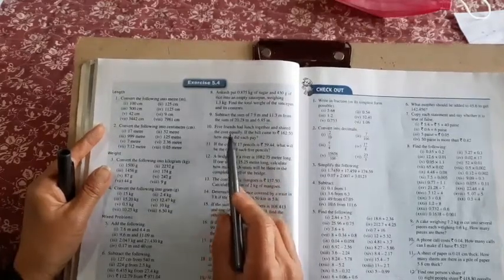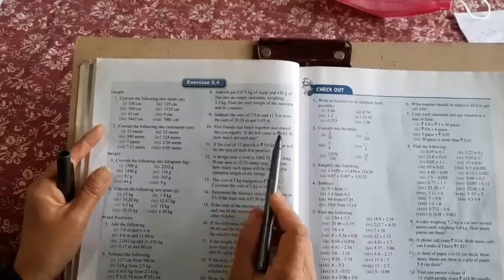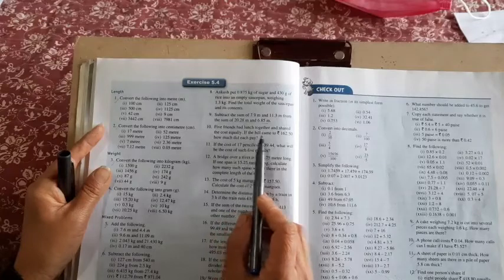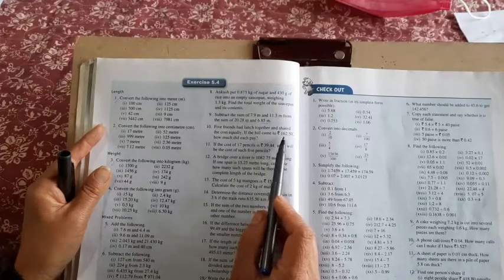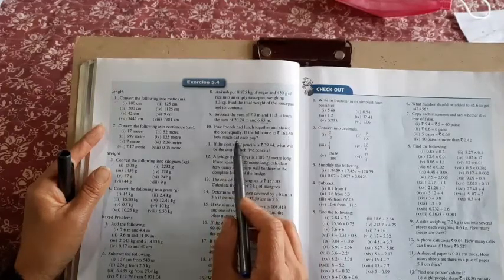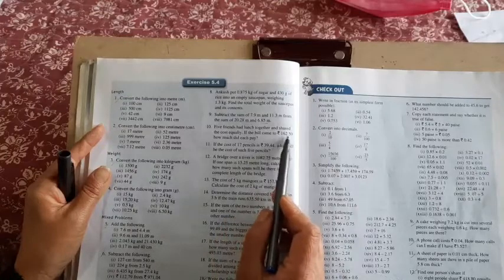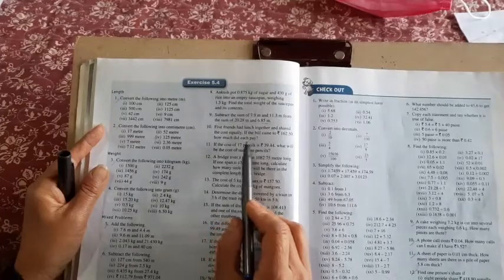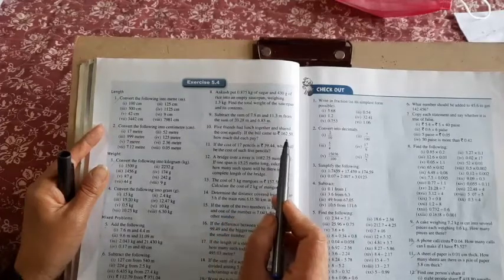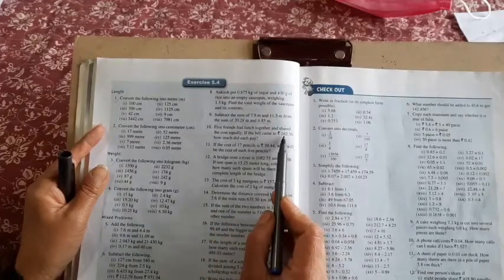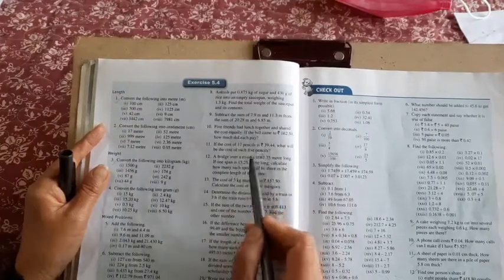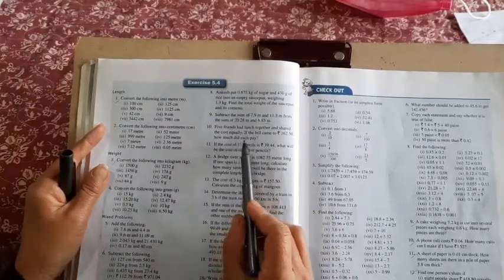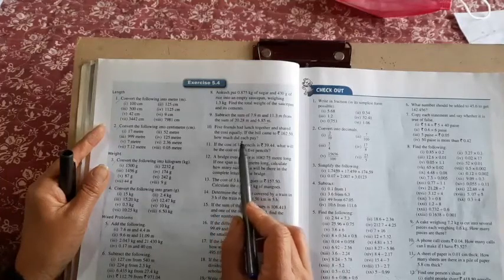Question number 10: Five friends had lunch together and share the cost equally. If the bill came to rupees 162.50, how much did each pay? This is the total bill divided by 5. That will be the amount each have to pay. Divide 162.50 by 5, your answer will be in rupees.